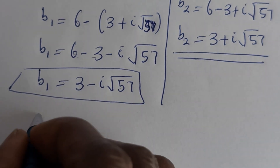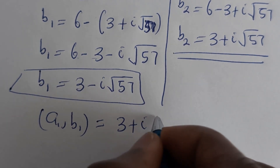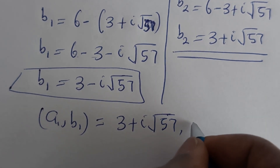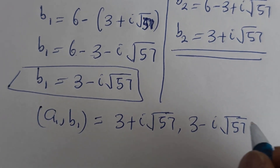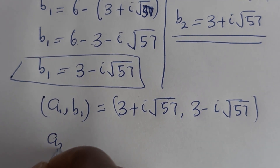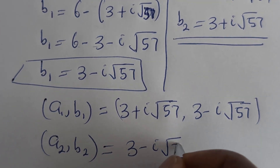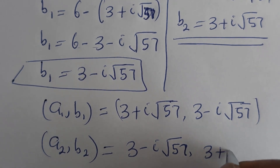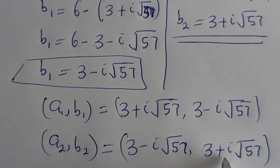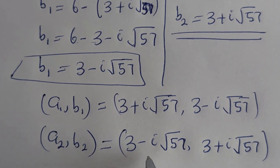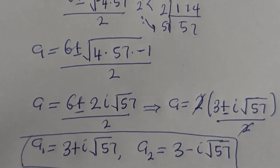Therefore our final answers are: (A₁, B₁) equals (3 plus i√57, 3 minus i√57), and (A₂, B₂) equals (3 minus i√57, 3 plus i√57). You can see that the value of A₁ equals the value of B₂, and the value of B₁ equals the value of A₂. I hope you enjoyed the video. Thank you for watching — please don't forget to like, share, comment, and subscribe to my channel. Bye!